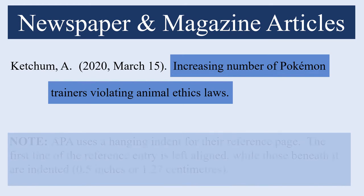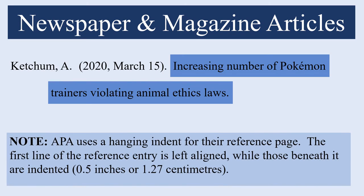In this case the title has broken through the first line and goes on to a second line. APA uses a hanging indent for their reference page. This means that the first line of the reference will be left aligned while the lines beneath it will be indented 0.5 inches or 1.27 centimeters.